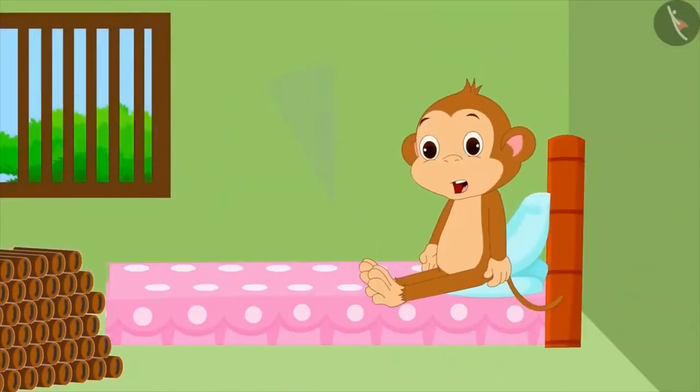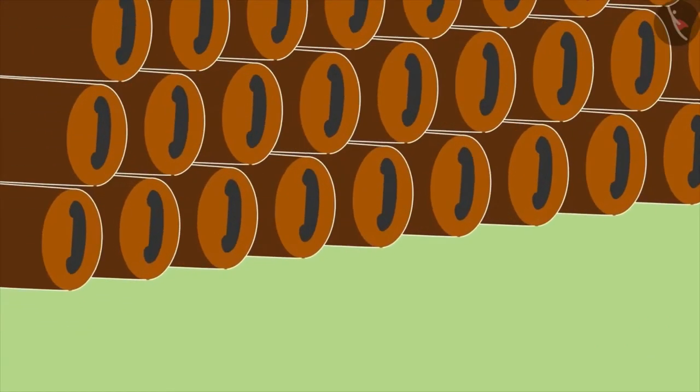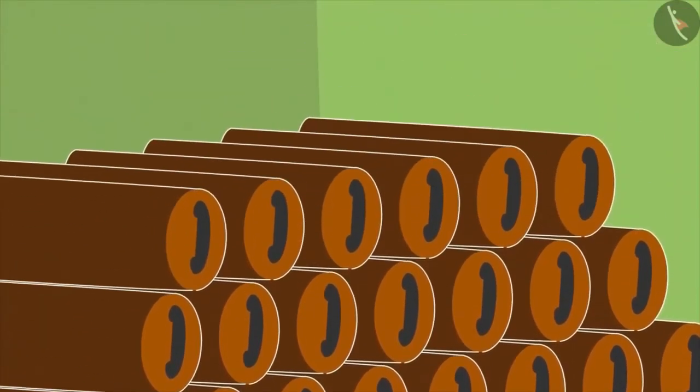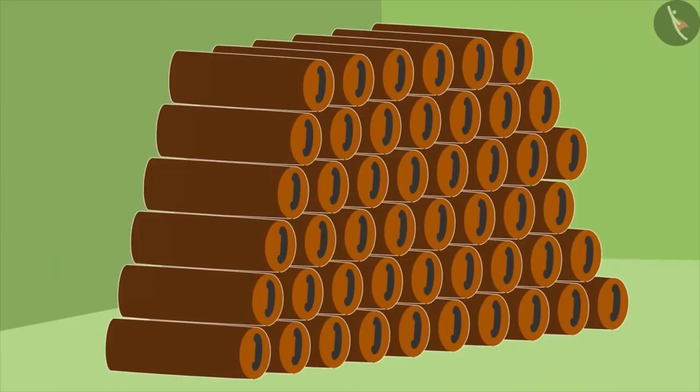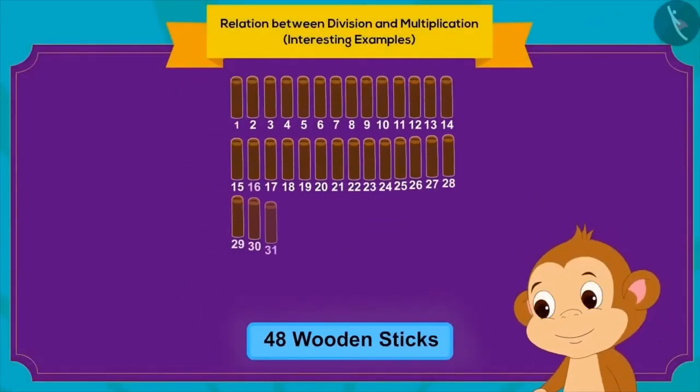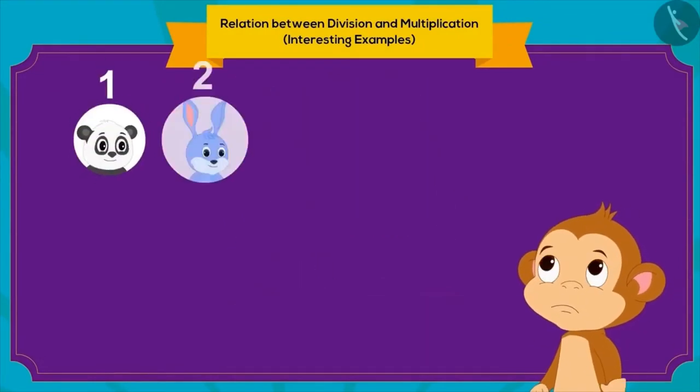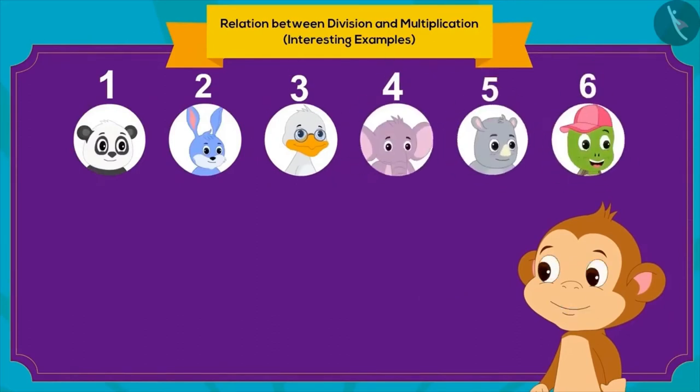Babban kept those sticks in one of the corners of his bedroom and slept. Next morning, when he woke up, he saw that those sticks had overnight turned into a large pile of sticks. There were 48 wooden sticks in total. He thought that he would divide these equally among his six friends. Can you tell, how many sticks will each friend get?